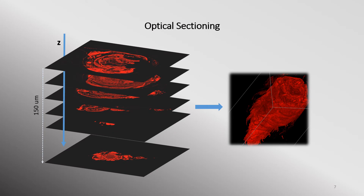Confocal scanning microscopy is presently the most widely used optical sectioning technique for fluorescence imaging. Optical sectioning acquires images of thin slices of a thick specimen by removing the contribution of out-of-focus light in each image plane. This removal of unwanted light provides greater contrast and permits three-dimensional reconstruction of a sample from images captured at different focal planes.